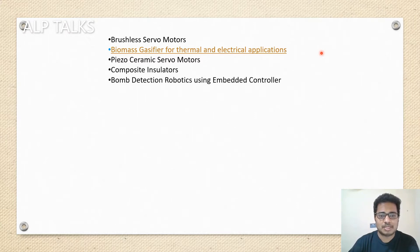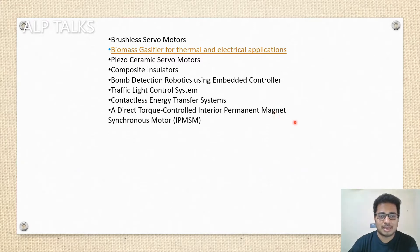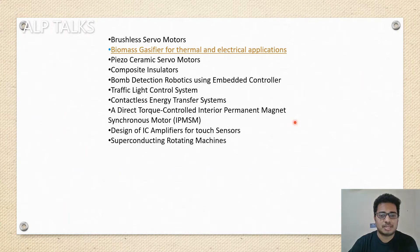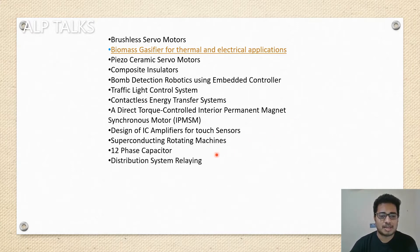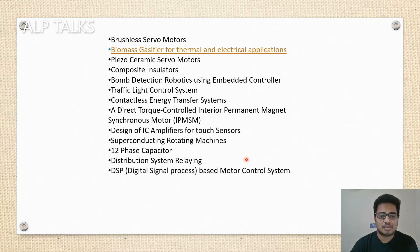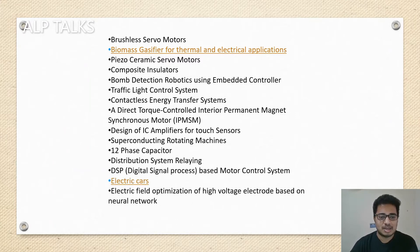Composite insulators, bomb detection robotics using embedded controls, traffic light control systems, contactless energy transfer systems, a direct torque controlled interior permanent magnet synchronous motor, design of IC amplifiers for voltage sensors, superconducting rotating machines, and 12 phase capacitor, distribution system relaying, digital signal processing based motor control system, electric cars, and electric field optimization of high voltage electrode based on neural network.